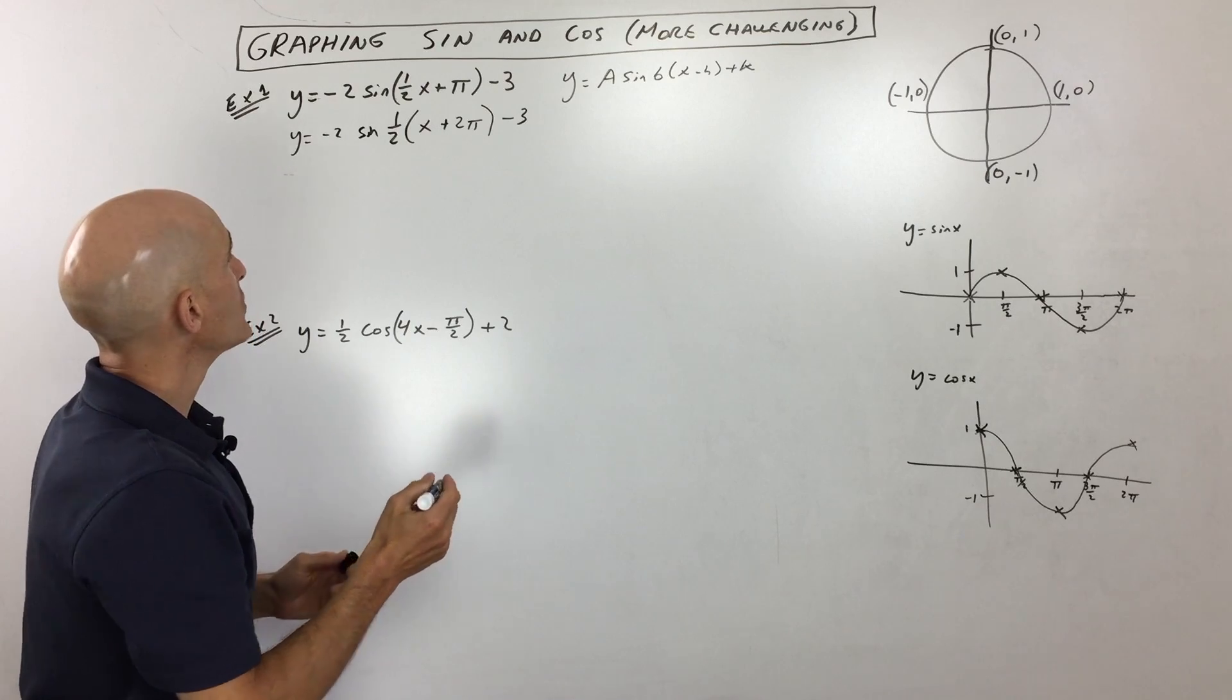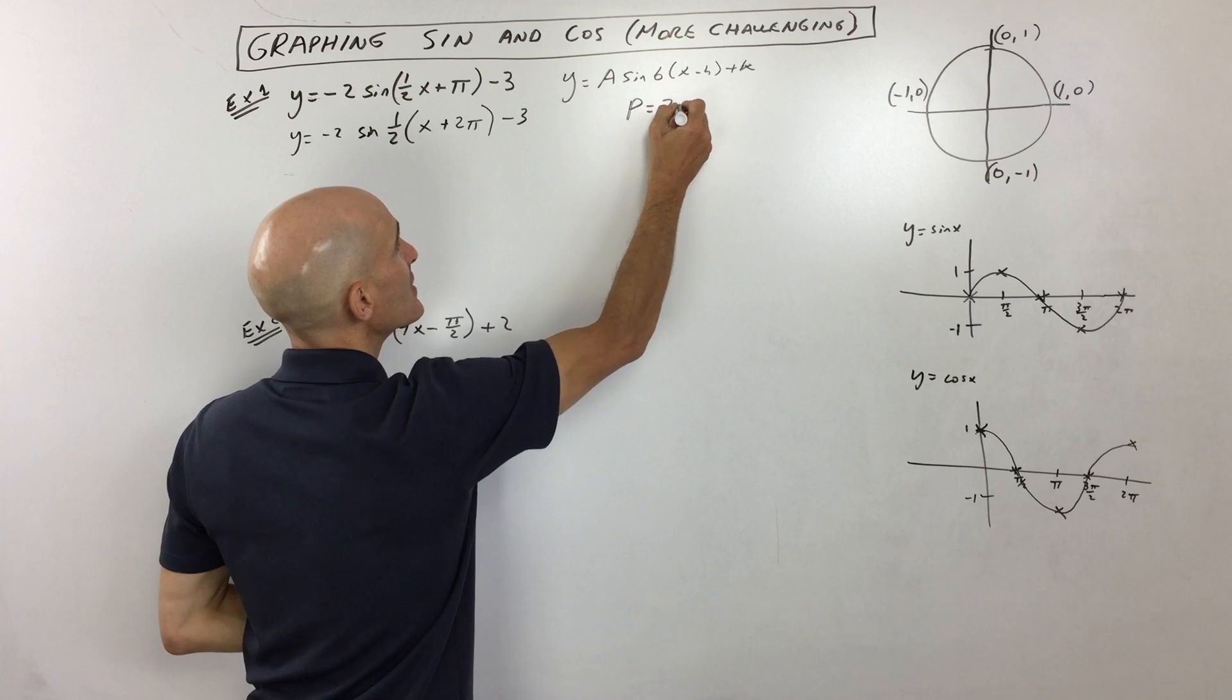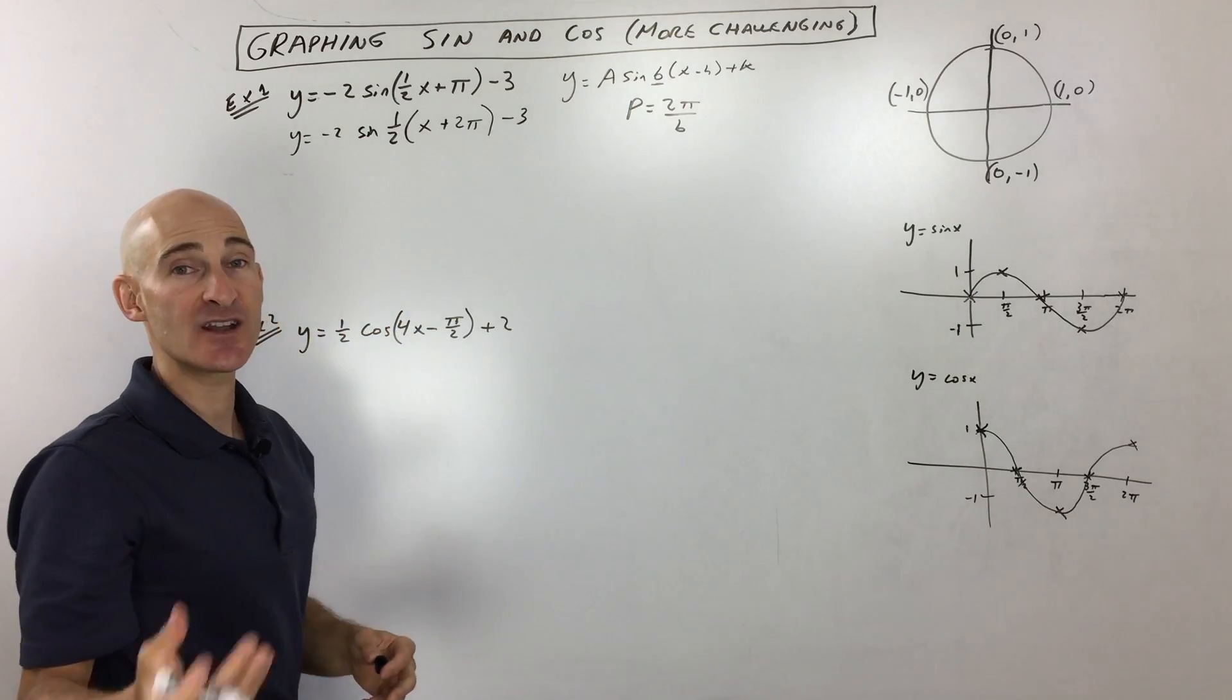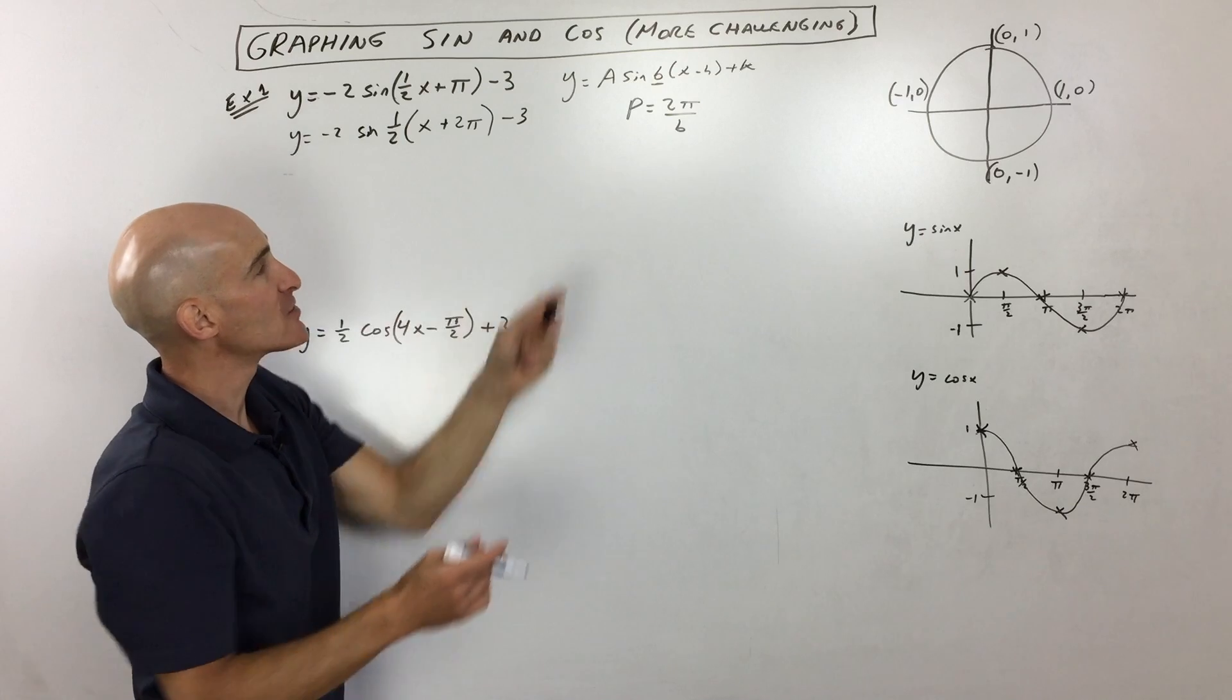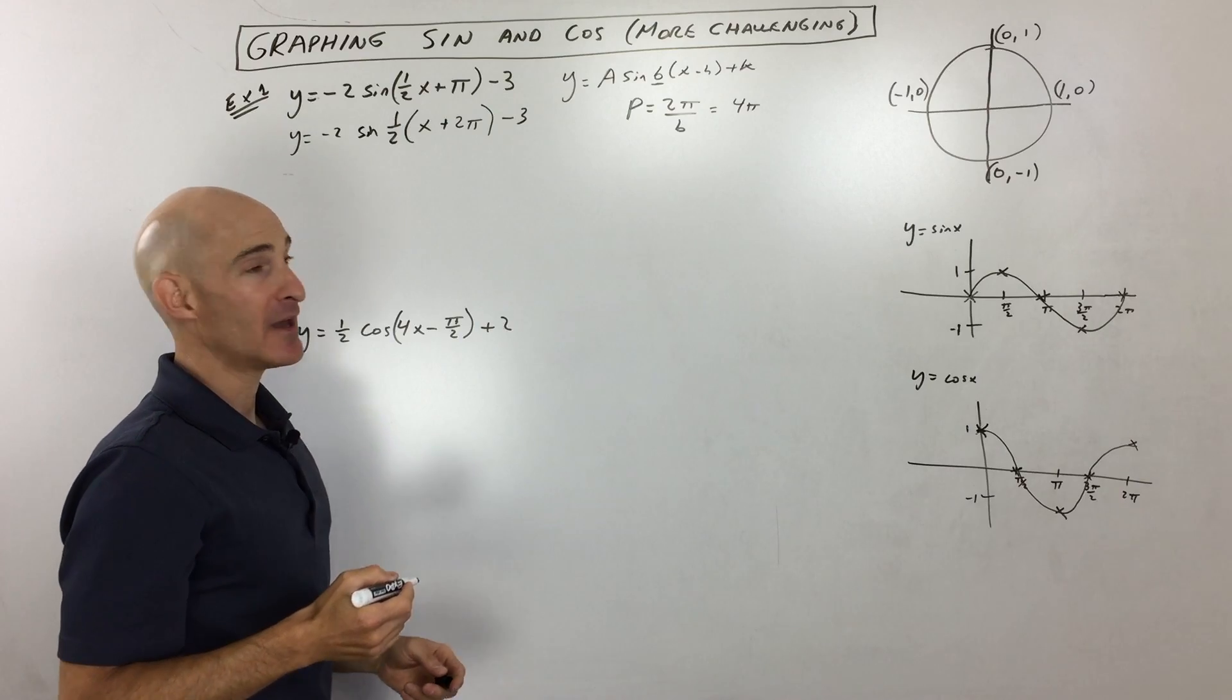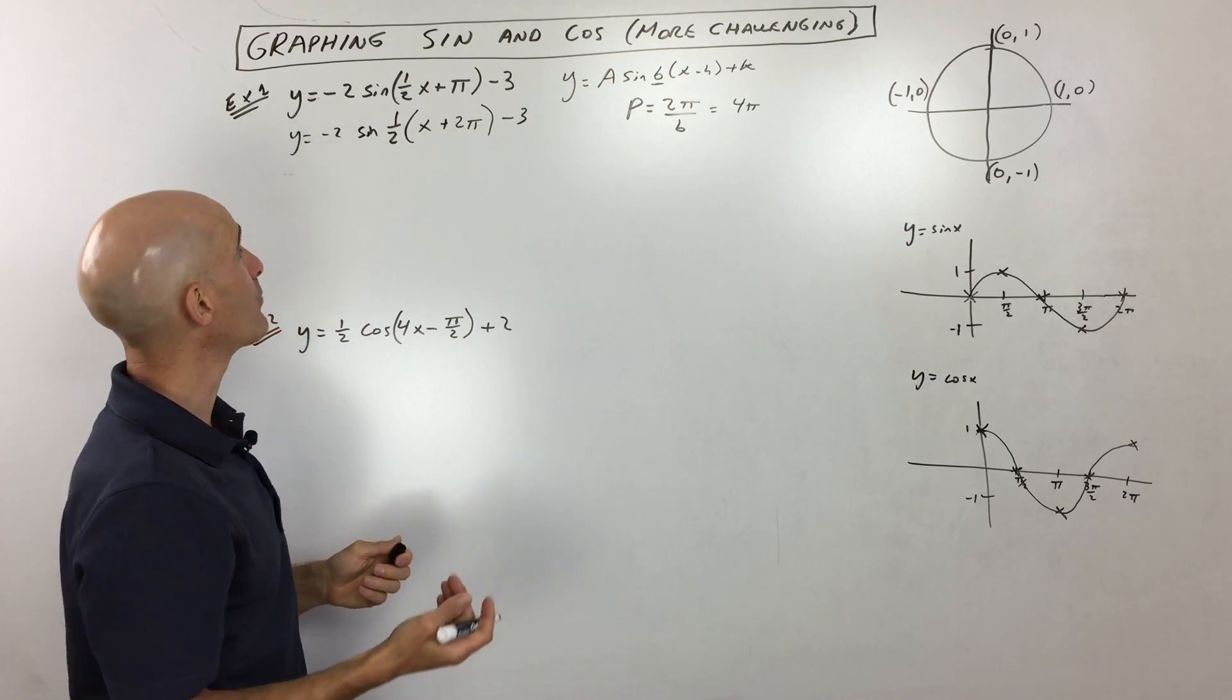Okay, so now what we want to do is analyze what is the period. You can use this formula: period equals two pi divided by b, this b value. And that works for sine and cosine. Two pi is the normal period. Remember, once around the unit circle, two pi. But in this case, see how it's one half? So what's two pi divided by one half? Well, that's going to be four pi. Because when you divide by one half, it's like multiplying by the reciprocal. It's multiplying by two, so that's four pi.